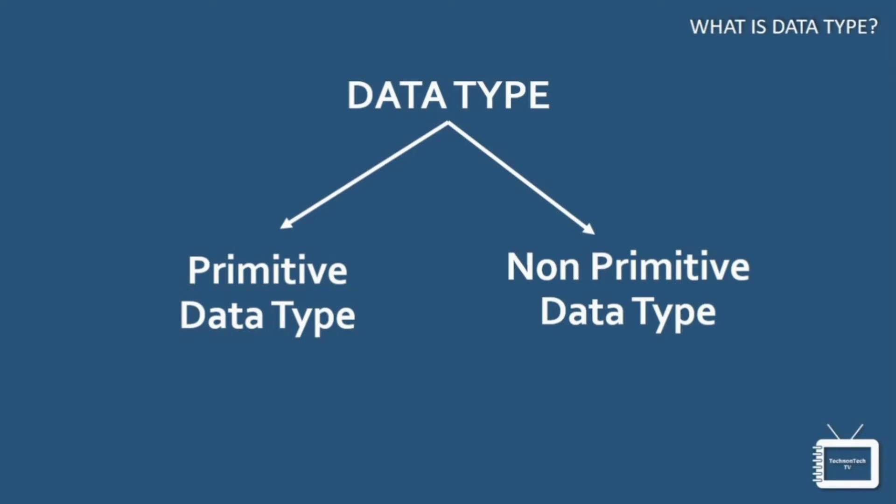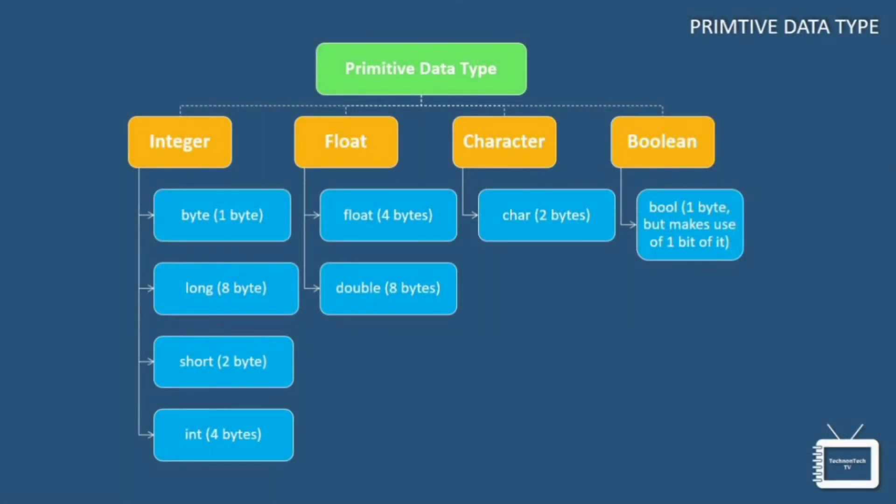And non-primitive data types are not actually defined by the programming language but are created by the programmer. They are also called reference variables or object references since they reference a memory location which stores the data. We'll talk about reference types in a later lesson, diving deeper into primitive types.